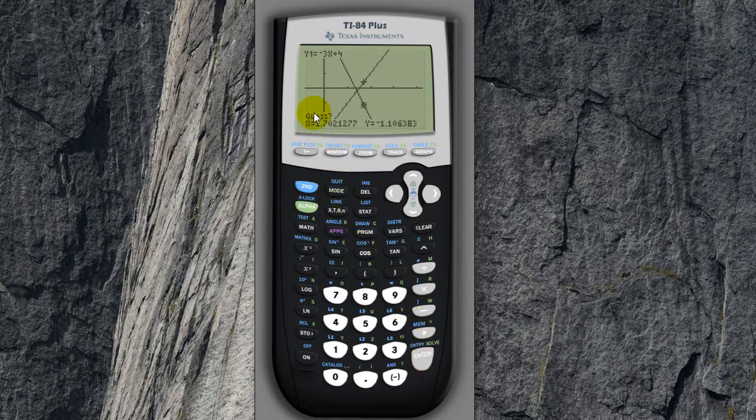And now it wants us to guess where the intersection is. So let's go to about here. Press enter. And it's found the intersection point. X is 1.4 and Y is negative 0.2. That's where the two lines intersect.